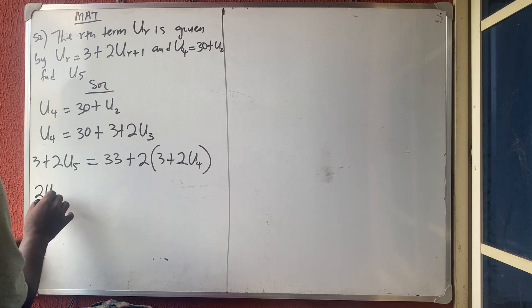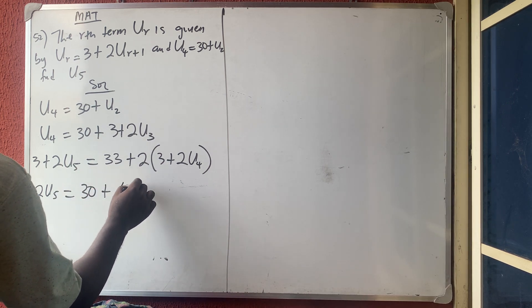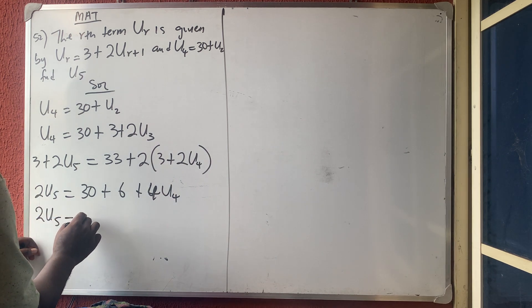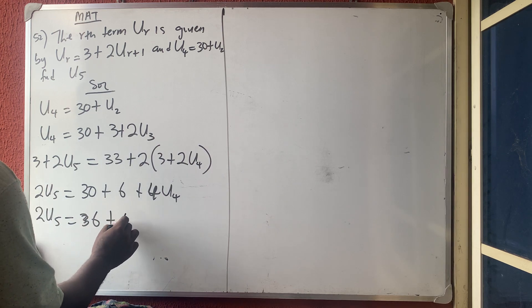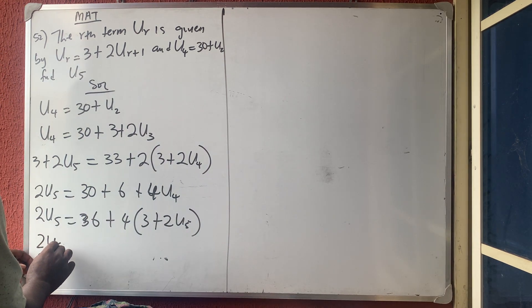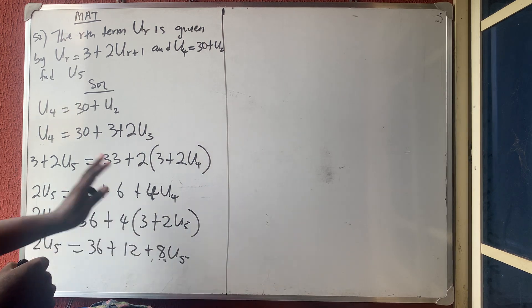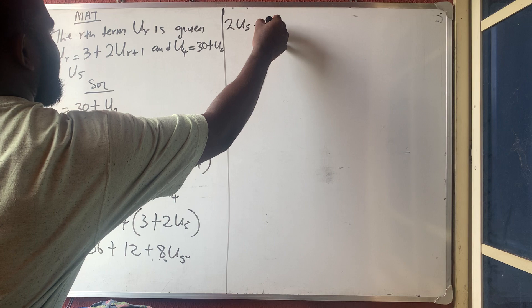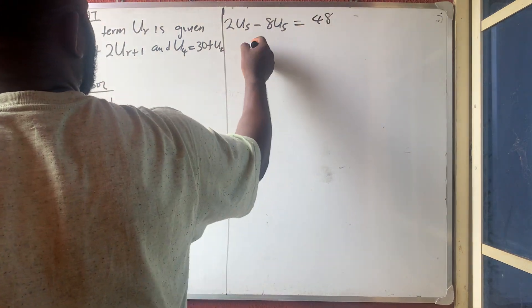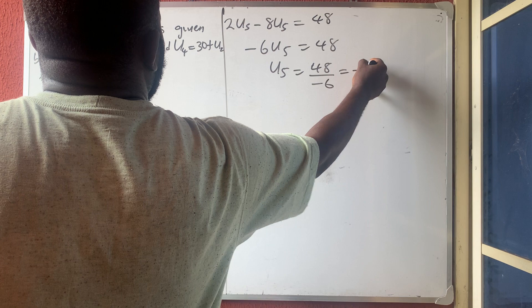Substituting: 2·u5 = 33 minus 3, which is 30, plus 6 plus 4·u4. Since u4 is known, 2·u5 = 36 plus 4·u4. Replacing u4 with (3 plus 2·u5) gives 2·u5 = 36 plus 12 plus 8·u5. So 2·u5 minus 8·u5 equals 48, meaning minus 6·u5 = 48, so u5 = 48 divided by minus 6, which is minus 8.